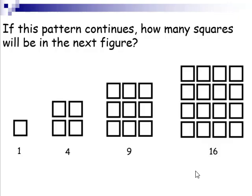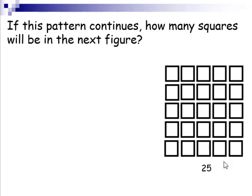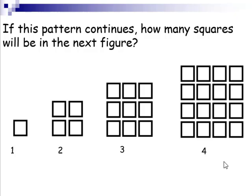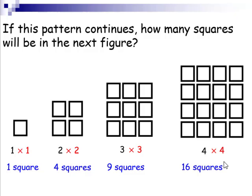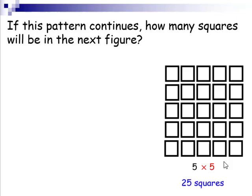If this pattern continues, how many squares will be in the next video? One way of seeing the pattern is to add 3. 1 plus 3 is 4, then 4 plus 5 is 9, then 9 plus 7 is 16. We're going up by odd numbers, and the next odd number would be 9. 16 plus 9 is 25. Here's another way: 1 times 1, 1 square. 2 times 2, 4 squares. 3 times 3, 9 squares. 4 times 4, 16 squares. Therefore, the next one will most likely just be 5 times 5, giving us 25 squares.